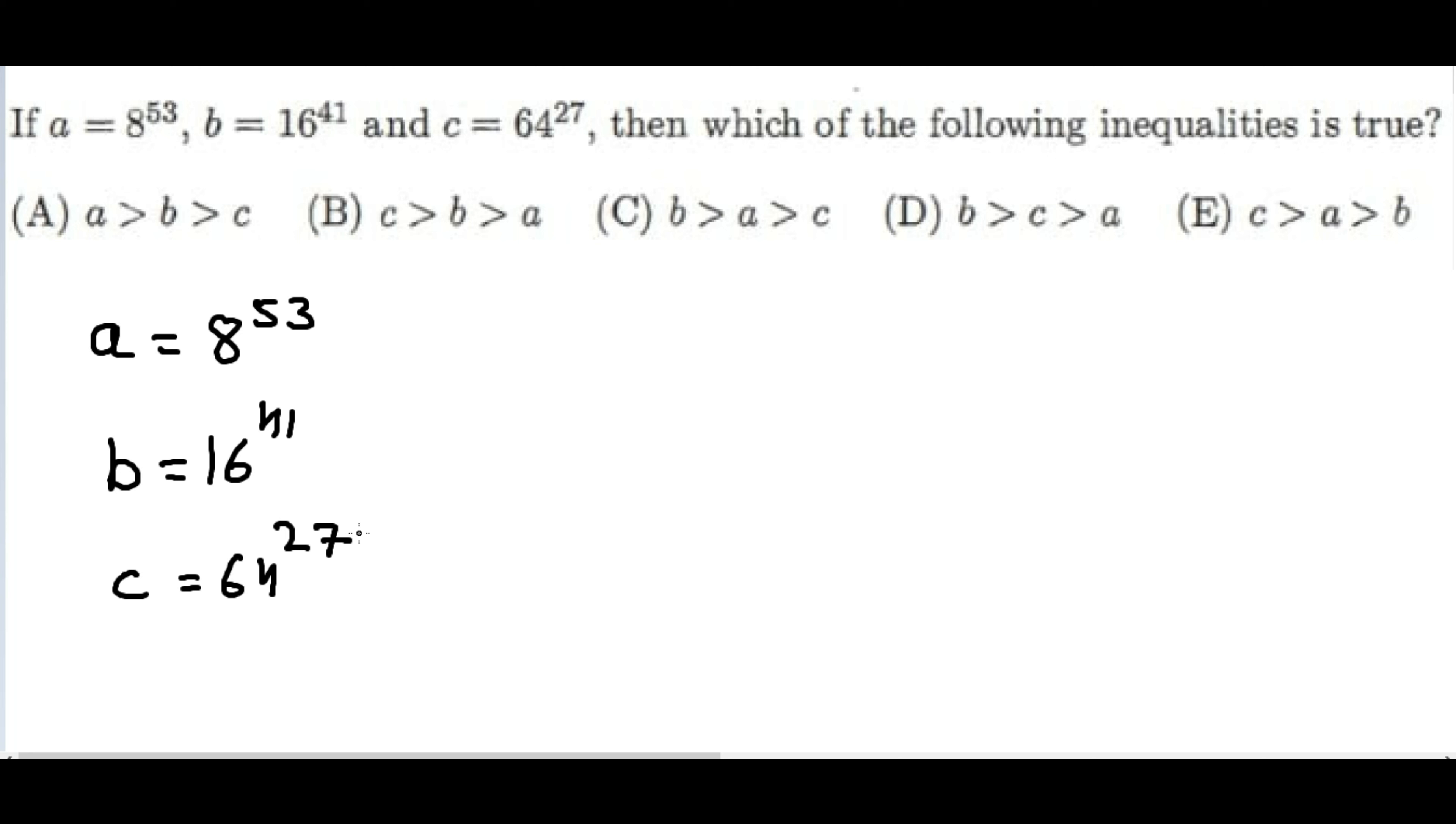As you know, 8 is 2 to the power 3, so it can be written as 2 to the power 3. The 53 is outside, and exponents get multiplied because of that bracket, so I will multiply: 3 times 3 is 9, 5 times 3 is 15, so I get 2 to the exponent 159.